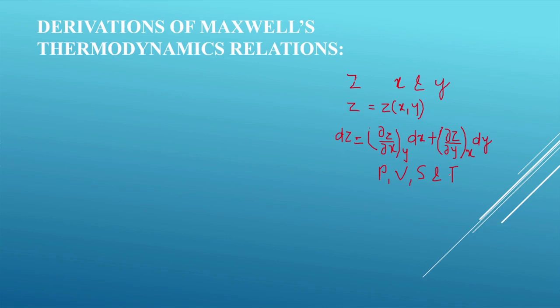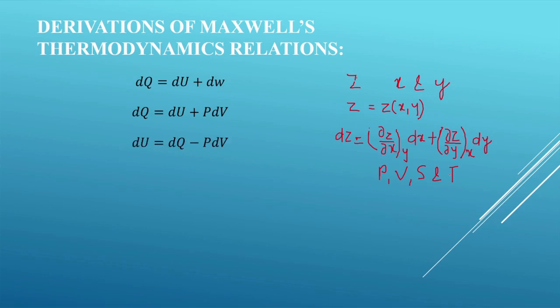We will start with the first law of thermodynamics. The first law is given as dq = du + dw, and the work done is written in terms of p dv. So we can write this as dq = du + p dv, and hence we can express the change in internal energy as du = dq − p dv. This is our first law written in terms of internal energy.